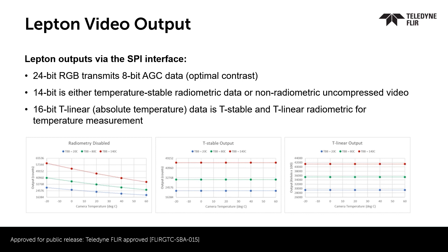If radiometry, or temperature, is a requirement, use the T-linear output. T-stable output can also be used, but an additional conversion will be necessary to get the temperature output. The 8-bit interface, or AGC interface, is generally used when radiometry is not a factor.